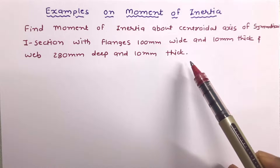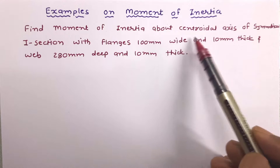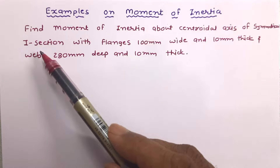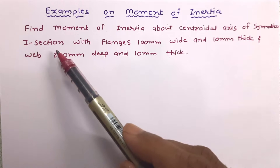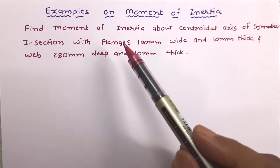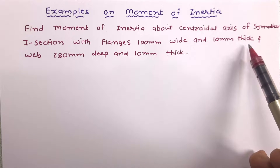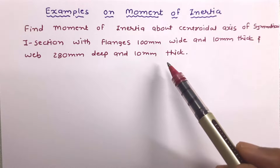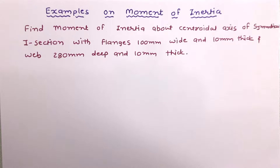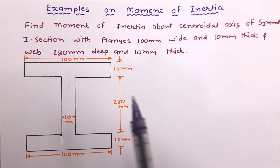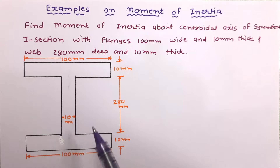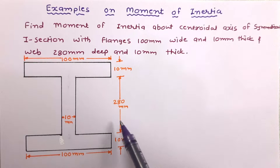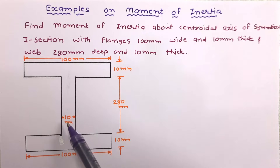We need to work out the moment of inertia about the centroidal axis — both the XX and YY axes. The section given is a symmetrical I-section having flanges 100 mm wide and 10 mm thick. The dimensions of the web are also given. Let us draw the figure: the flange dimension is 100 mm by 10 mm, and the web dimension is 280 mm by 10 mm.